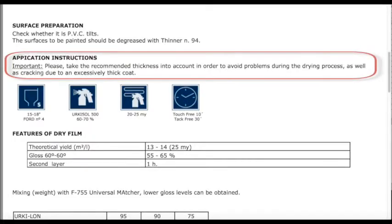Next down, we have Application Instructions. So important. Please take the recommended thickness into account in order to avoid problems during the drying process. What that's telling us is be careful how much paint you apply. If you put too much paint on, you can have issues like cracking or peeling. This reinforces why you should always check out a technical data sheet.